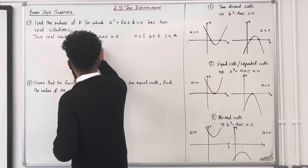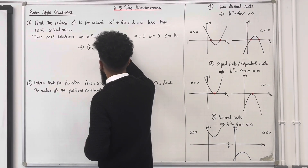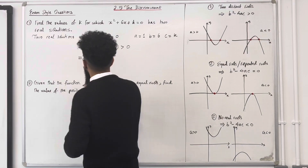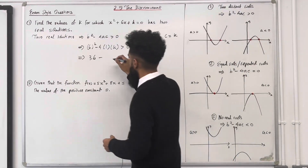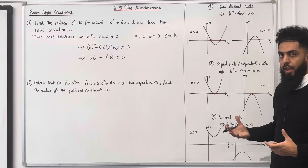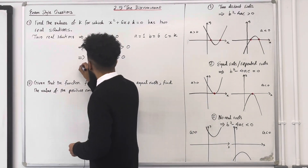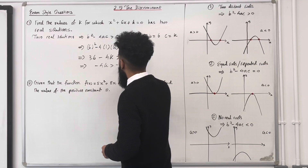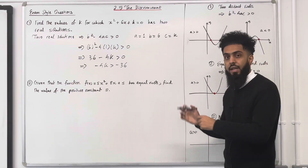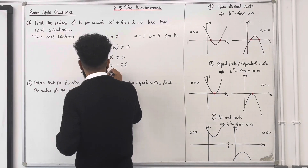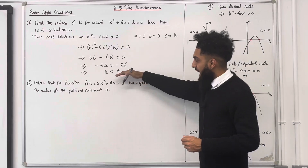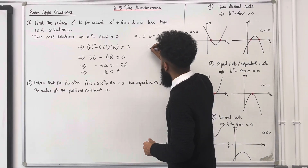So we have 36 minus 4k greater than 0. We've generated a linear inequality in k. Rearranging: minus 4k is greater than minus 36. Dividing both sides by minus 4 — and flipping the inequality — gives k less than 9. So this quadratic equation has two real solutions for k less than 9.